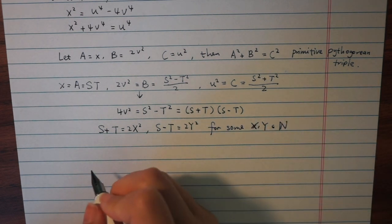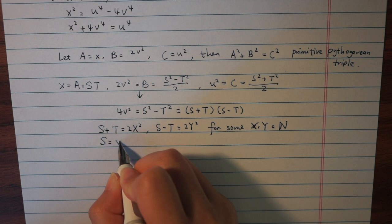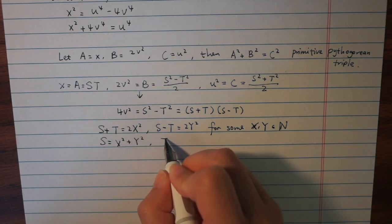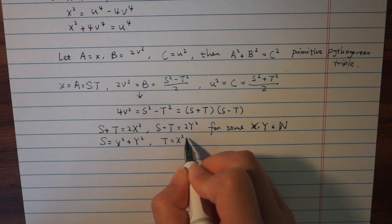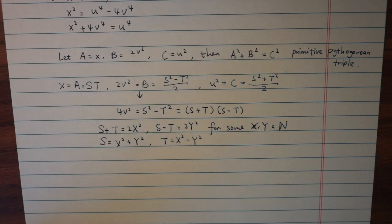Solving for S and T in terms of X and Y gives capitalized S equals X squared plus Y squared, and capitalized T equals X squared minus Y squared.